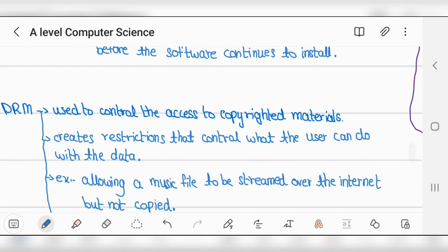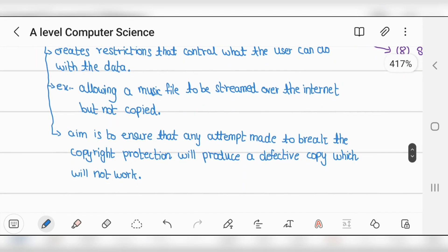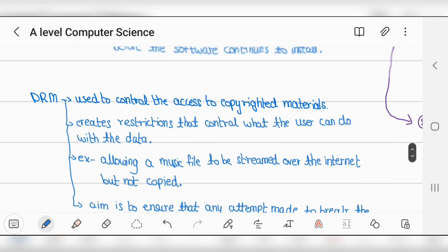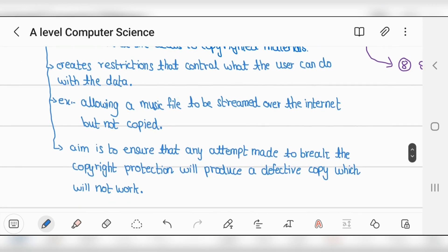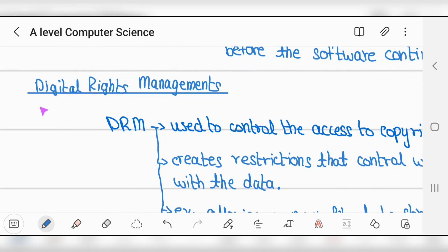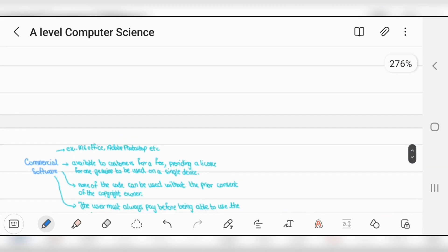DRM - Digital Rights Management - is used to control access to copyrighted material. Its aim is to ensure any attempt to break copyright protection produces a defective copy that won't work. It creates restrictions controlling what users can do with data, for example allowing streaming music over the internet but not copying.